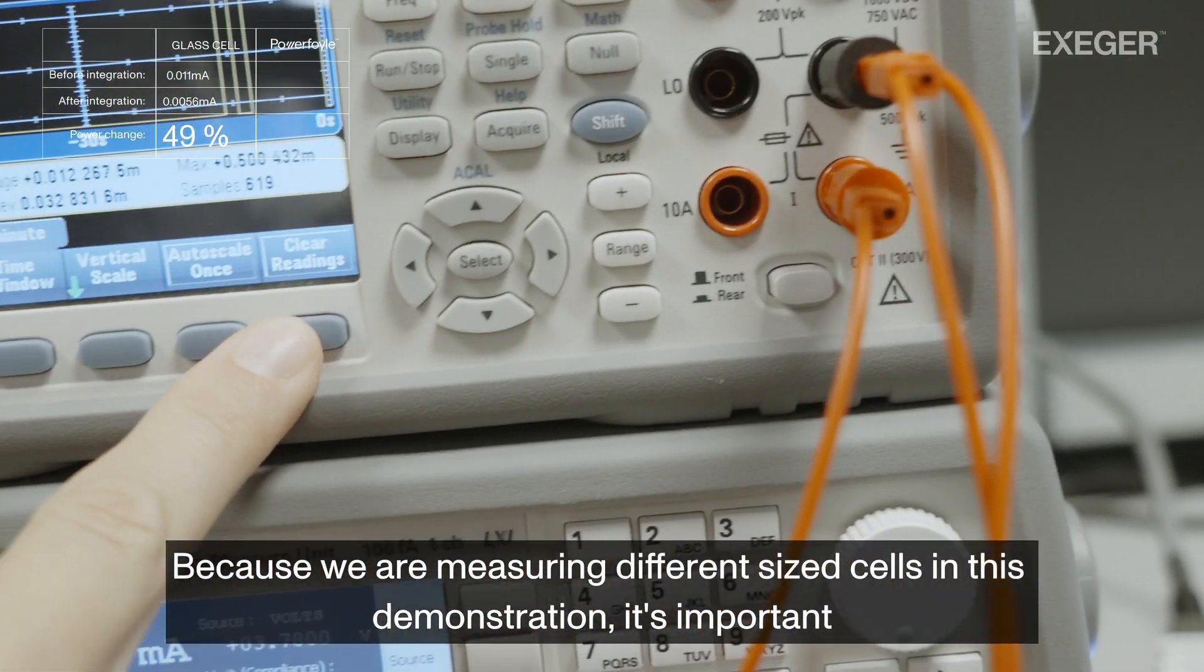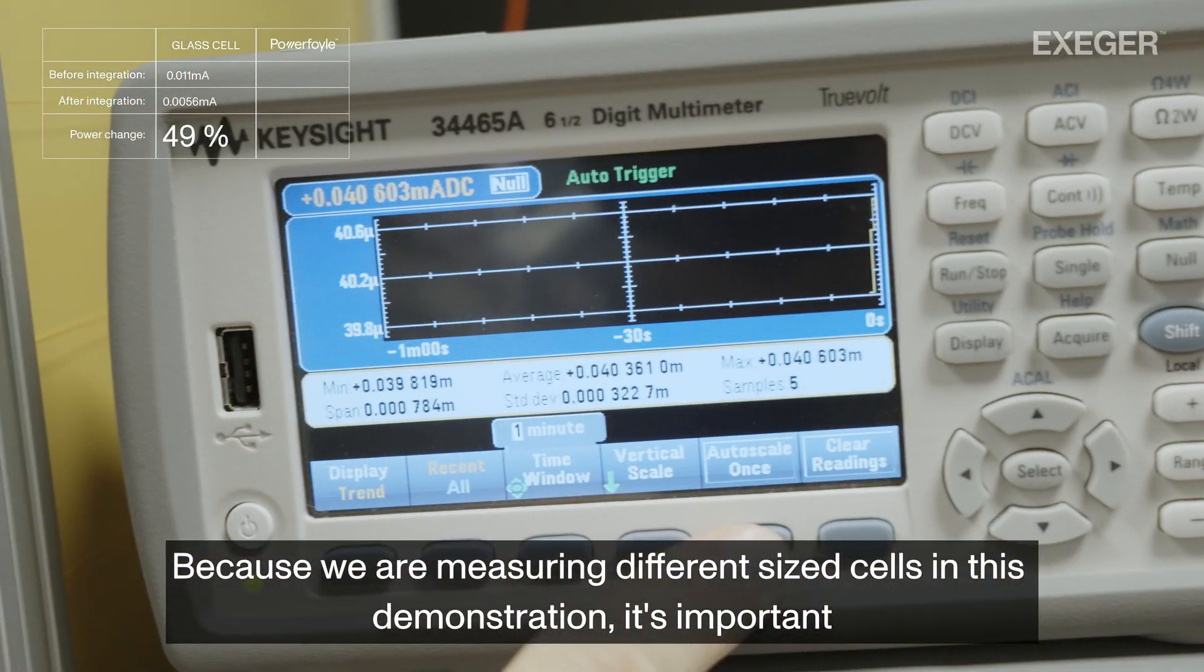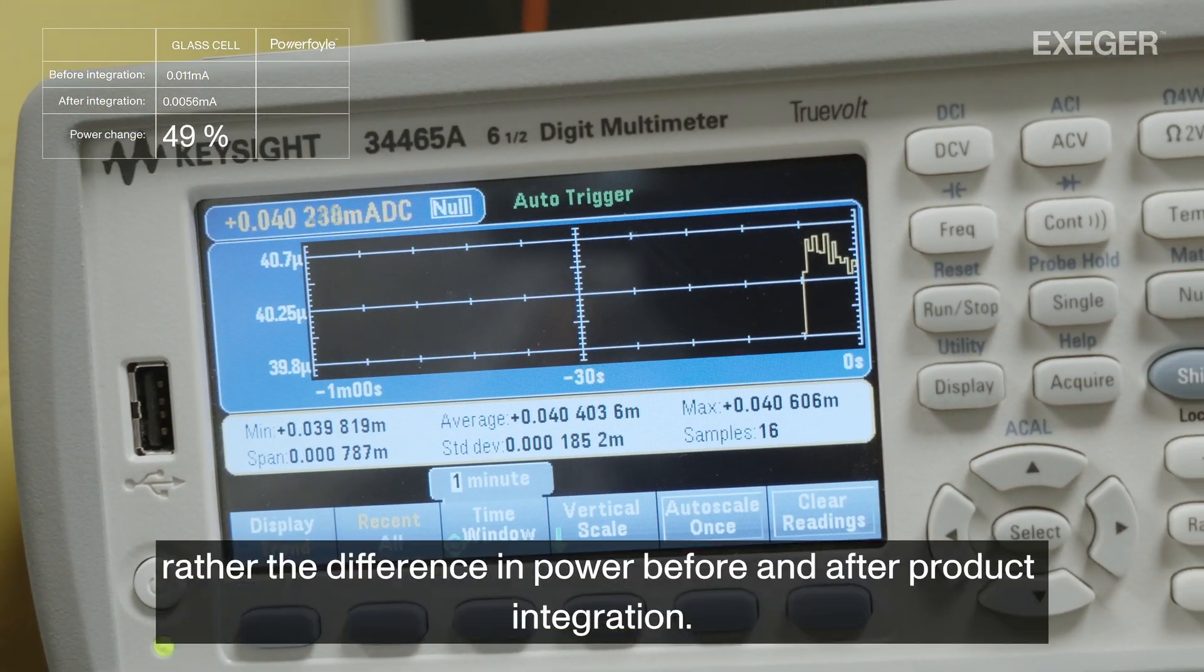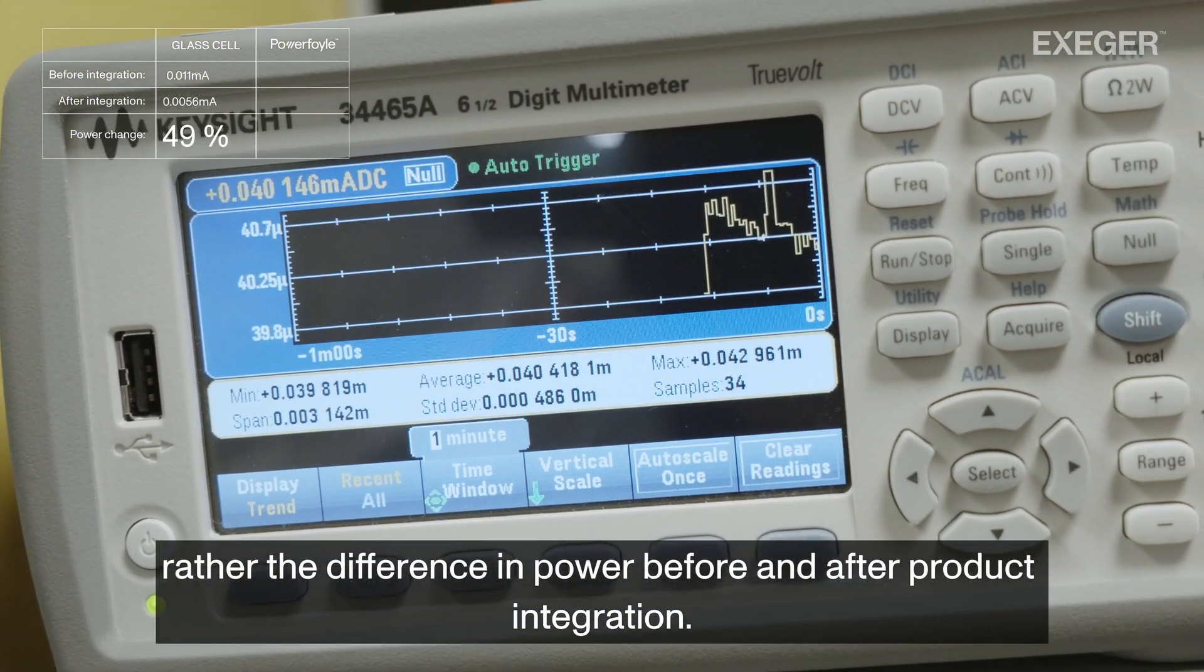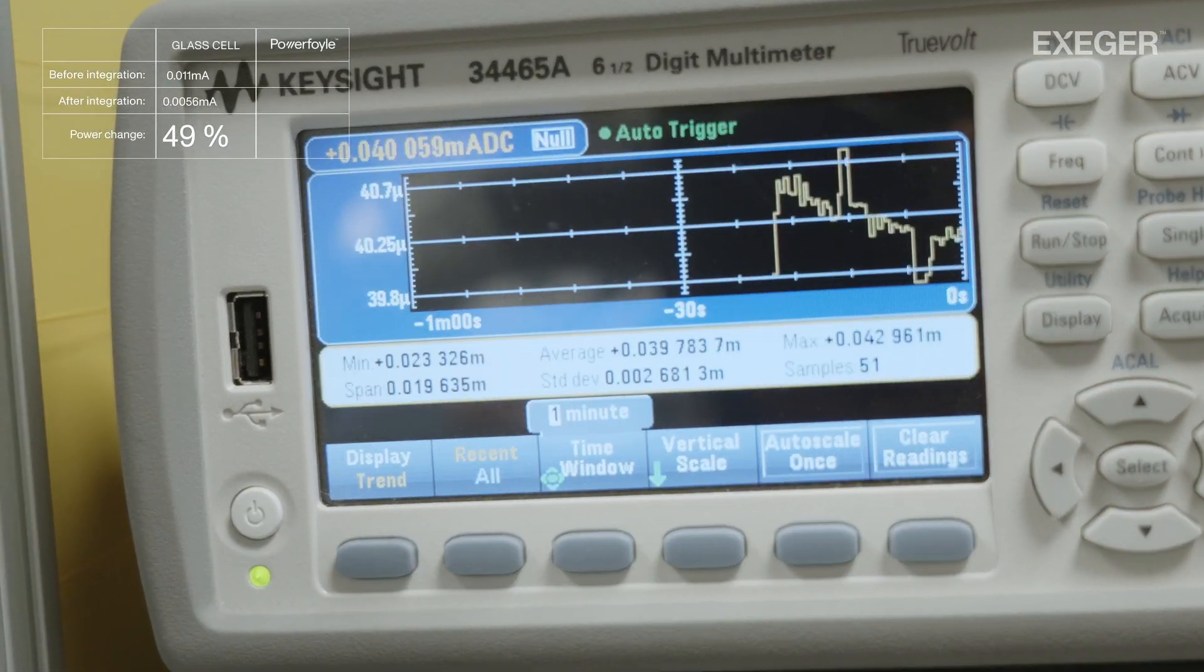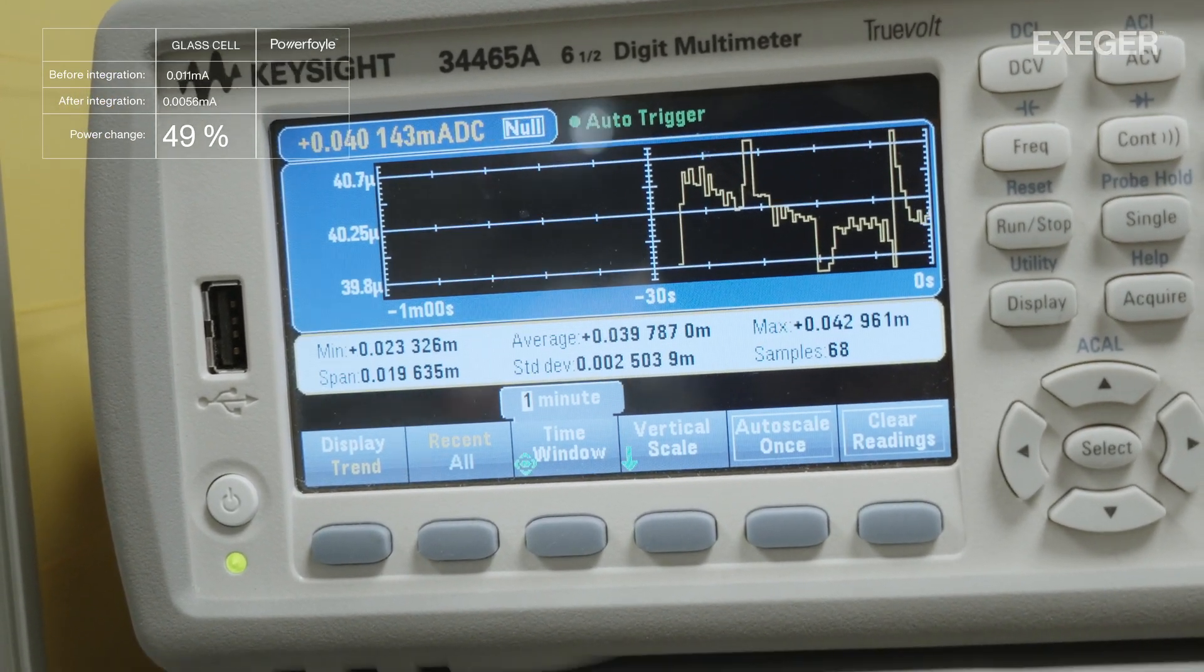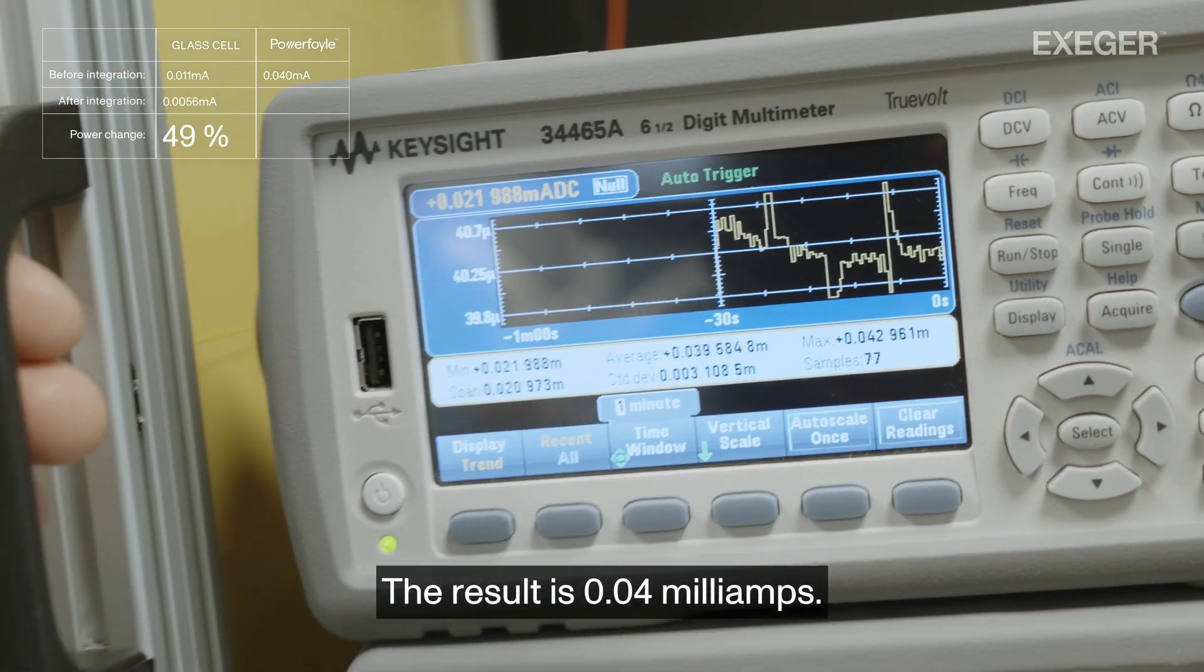Because we are measuring different sized cells in this demonstration, it's important not to compare the power density numbers, but rather the difference in power before and after product integration. The result is 0.04 milliamps.